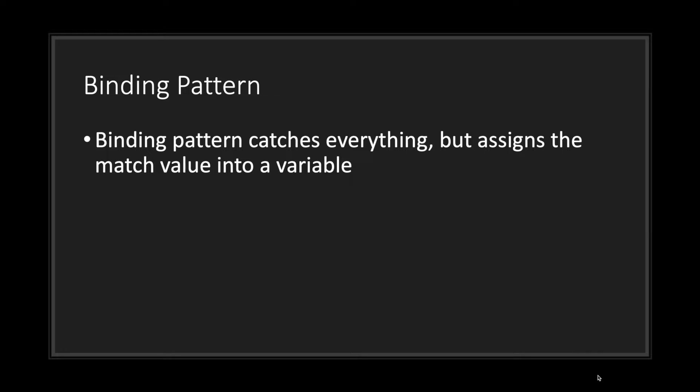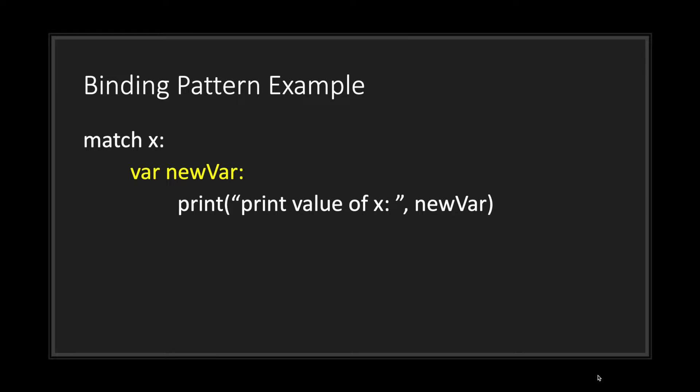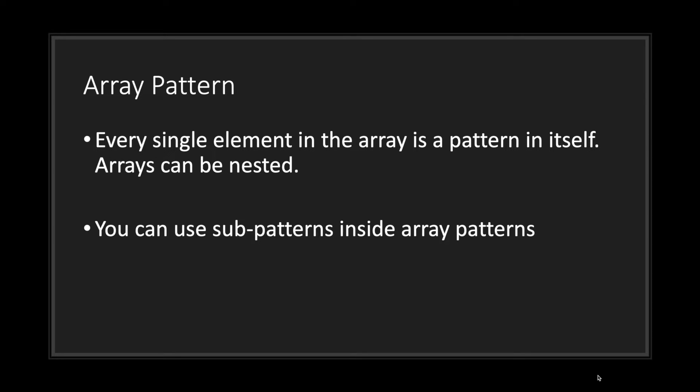Next we have the binding pattern. The binding pattern catches everything just like the wildcard, however it assigns the match value into a variable. You declare a variable in your match pattern using the keyword var followed by a variable name. Whatever is in your match value gets passed onto that variable, and you can use that name in your block statement. Keep in mind that these variables are locally scoped — you can only use the variable name in the block statement belonging to that pattern.